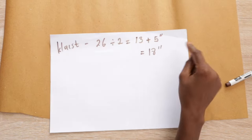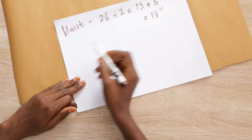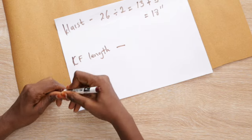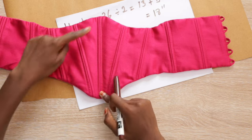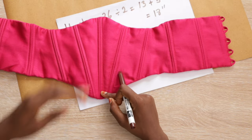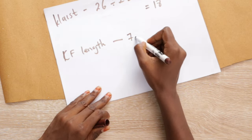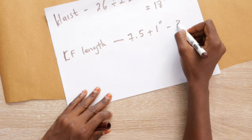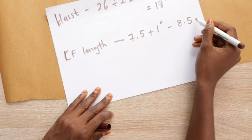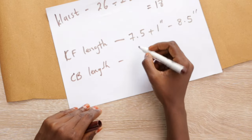Next you are going to need your center front length. What I mean is the length in the middle, so how long you want your corset to be. It can be from the middle of between your breast to your navel or below your navel, however you want it. I chose to have it 7.5. I add 1 inch seam allowance and that gives me 8.5.